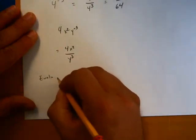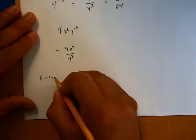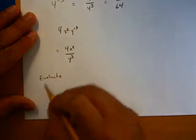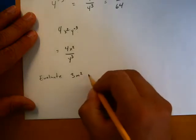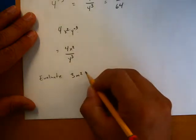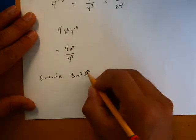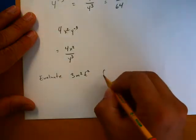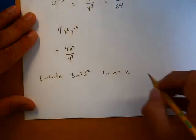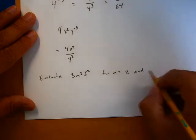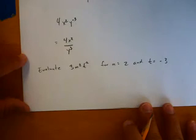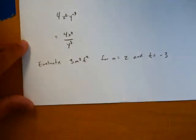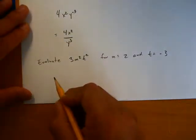Evaluate 3m squared t to the negative 2 for m is equal to 2 and t is equal to negative 3. I don't have a lot of space here, so we better be conservative with our paper.